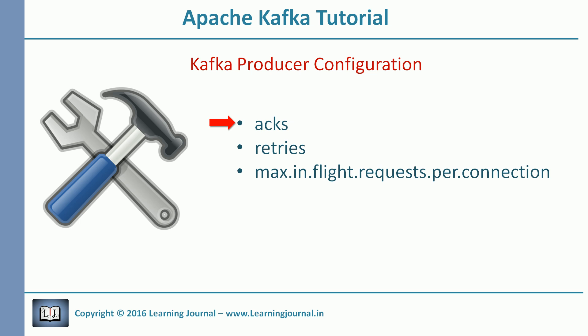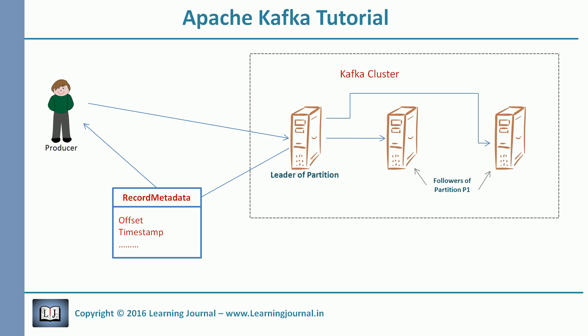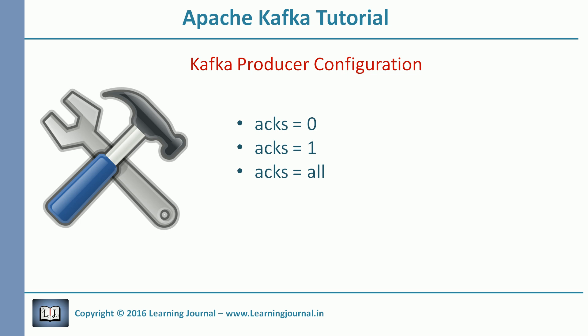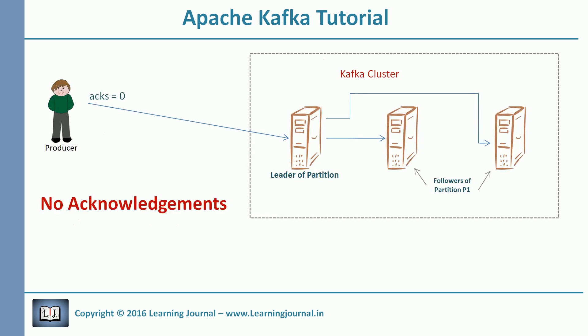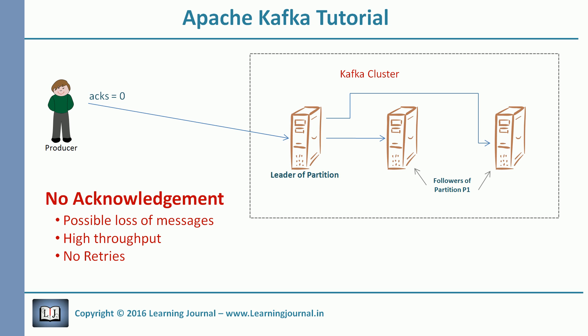Now let's start with the first configuration — the acks configuration. The acks configuration is used to configure acknowledgements. When a producer sends a message to a Kafka broker, it gets a response back from the broker. The response is a record metadata object or an exception. This parameter can take three values: 0, 1, and all. If we set it to 0, the producer will not wait for the response — it will send the messages over the network and forget it. There are three side effects of acks being 0: possible loss of messages, high throughput, and no retries.